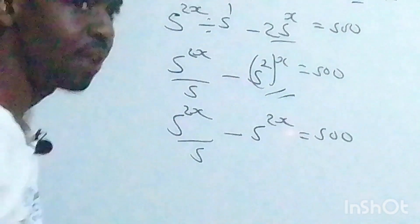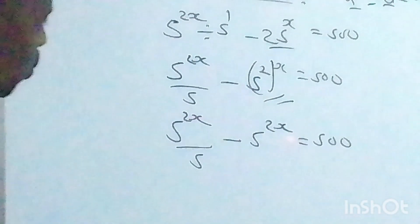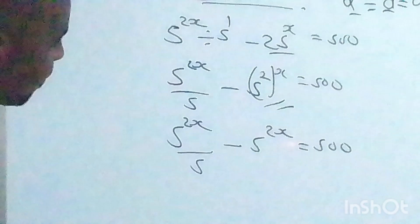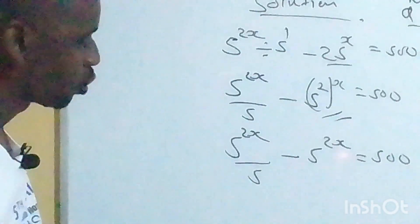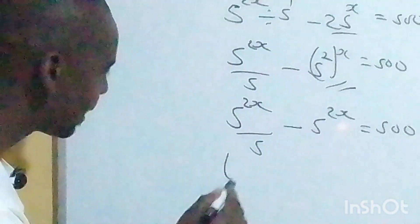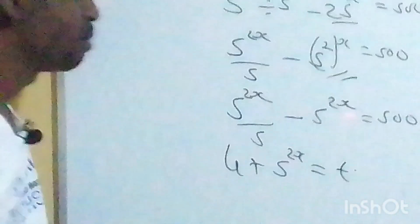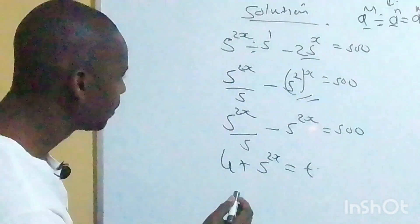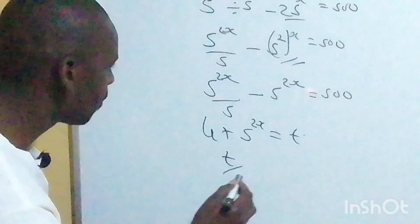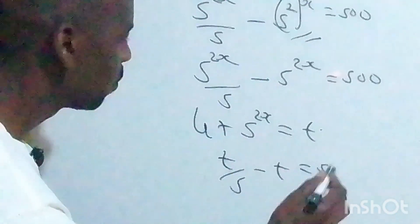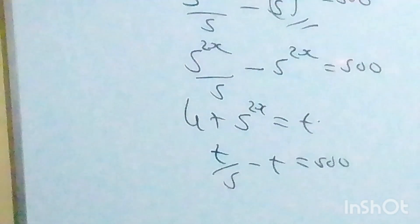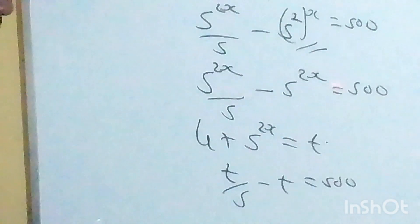You can see that 5^(2x) is common. So let 5^(2x) equal some variable t. Then we have t over 5 minus t is equal to 500.